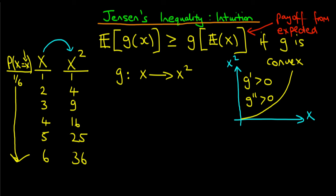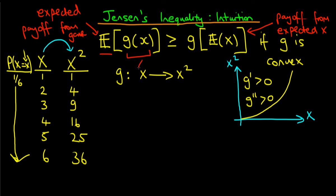The right-hand side of Jensen's inequality — g of the expected value of x — is just the payoff from the expected value of x. The left-hand side — the expected value of g of x, which is x squared — is the expected payoff from actually playing the game. Jensen's inequality therefore tells us that the expected payoff from playing the game should always be greater than or equal to the payoff from the expected value of x.